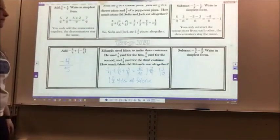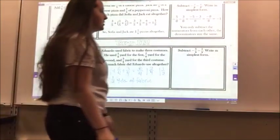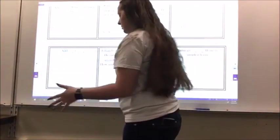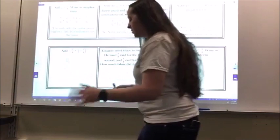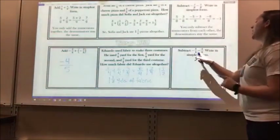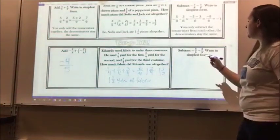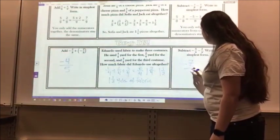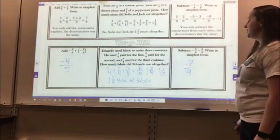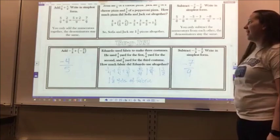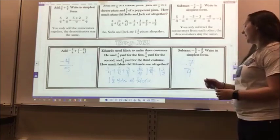For the last one, subtract negative 5 ninths minus 2 ninths. I subtract and I go backwards. Subtract negative 5 ninths minus 2 ninths. I get negative 7 ninths in simplest form. I cannot simplify that any further. It is as simplified as it gets.